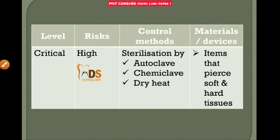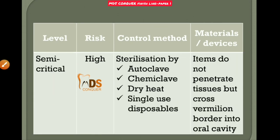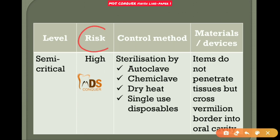Semi-critical instruments also have a high risk of disease transmission and must be sterilized by autoclave, chemiclave, dry heat, or single-use disposables. These are items that do not penetrate tissues but cross the vermilion border into the oral cavity.